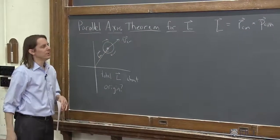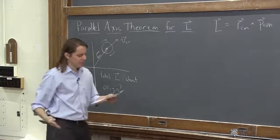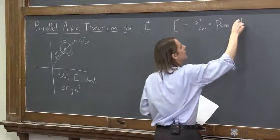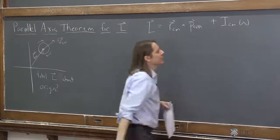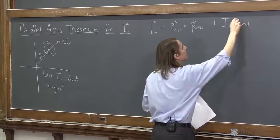So that cross product would give you the thing acting as a point particle. And then you just have to add I omega for the rotation about the center of mass, ICM omega, like that.